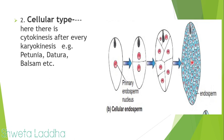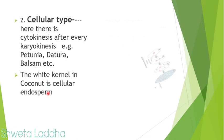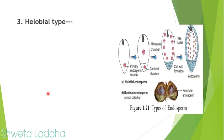In cellular type, cytokinesis occurs simultaneously with each nuclear division, unlike nuclear type where cell wall formation takes place only at the end. Cellular type is seen in petunia, datura, balsam, etc. In coconut, the white kernel part — called khopra in Marathi — is the cellular endosperm.